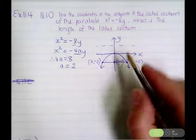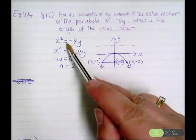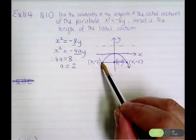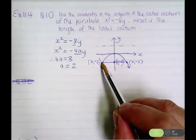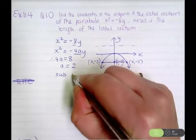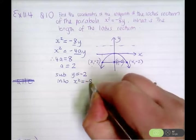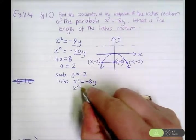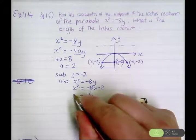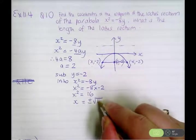We need to work out what these x values are. We know the parabola is x squared equals negative 8y. At the endpoints of the latus rectum, the y value is negative 2. So we substitute y equals negative 2 into x squared equals negative 8y. This becomes x squared equals negative 8 times negative 2, which is positive 16. So x squared is positive 16, therefore x is plus or minus the square root of 16.